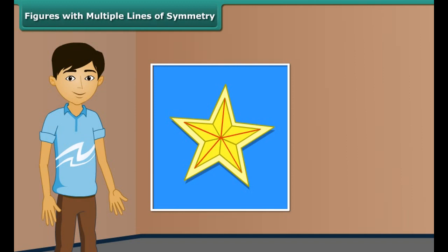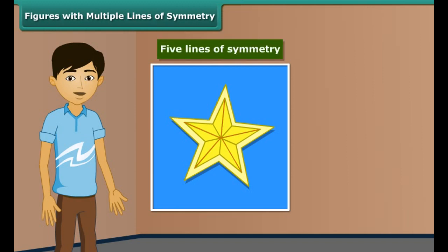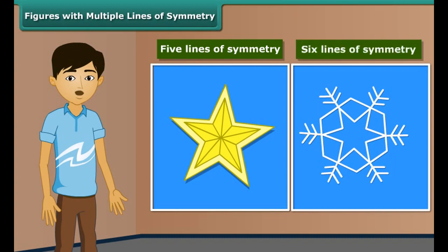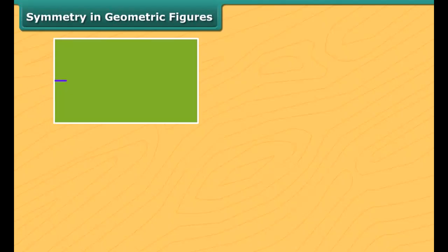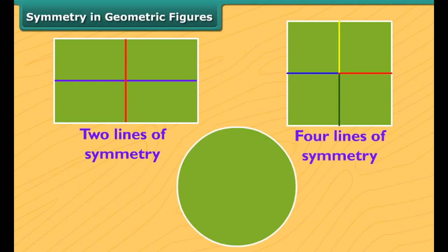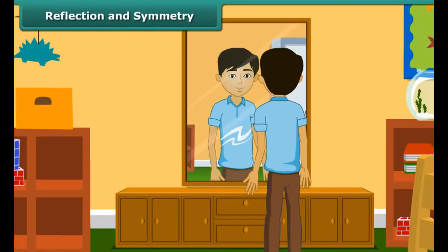Thus, we can say that a rectangle has two lines of symmetry. Collect the objects from the table and keep them into the group. Archie has two lunch boxes. One has three lines of symmetry — she doesn't like this box and keeps it away.